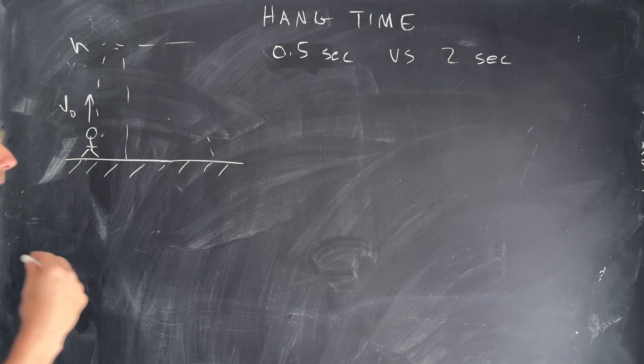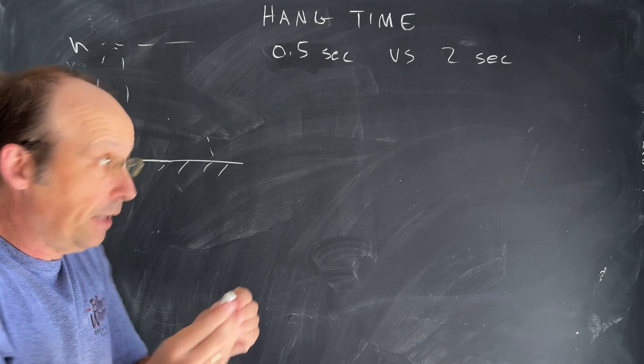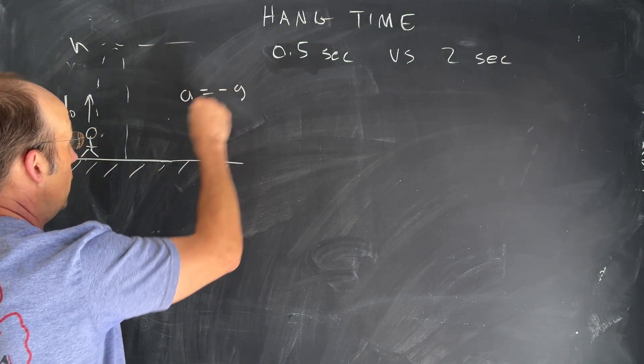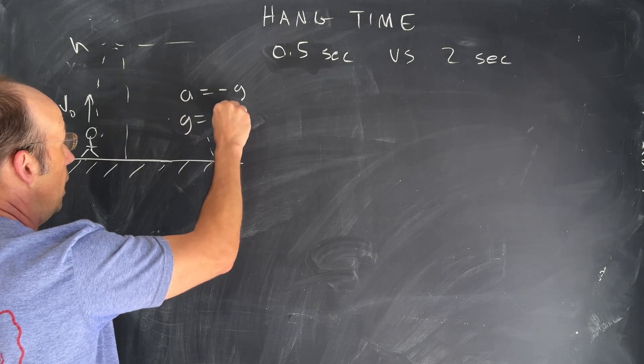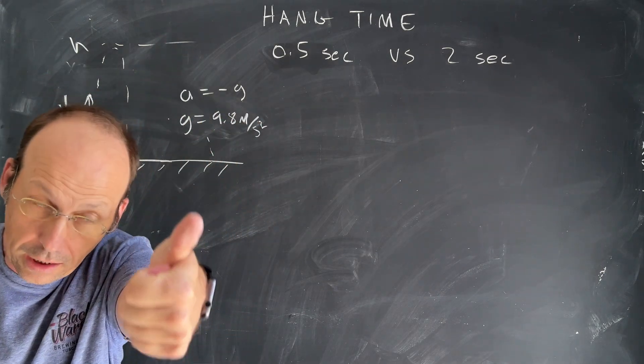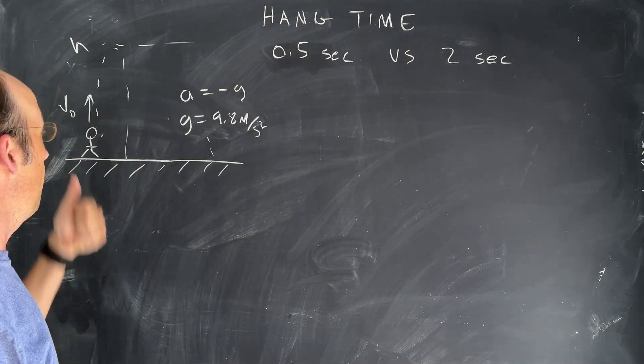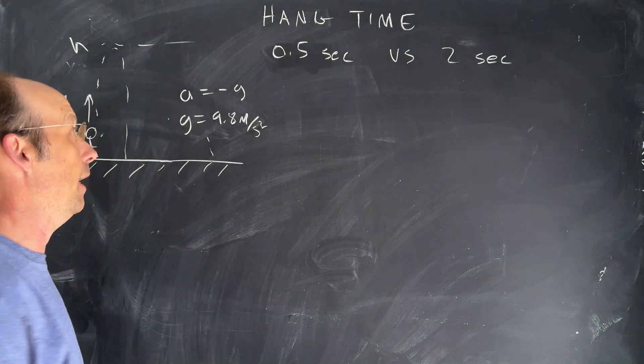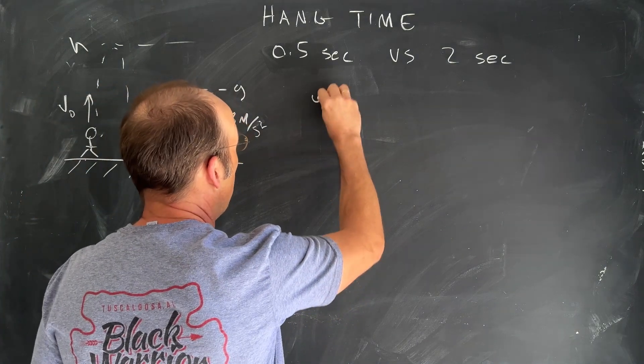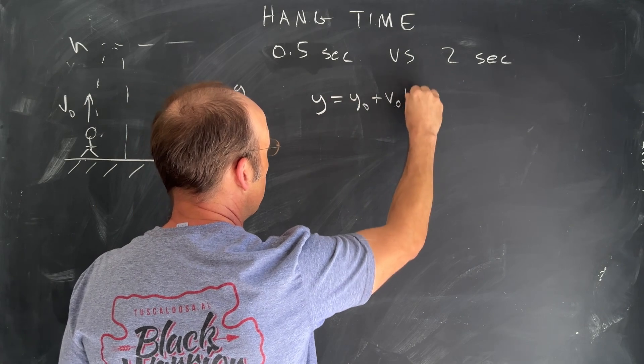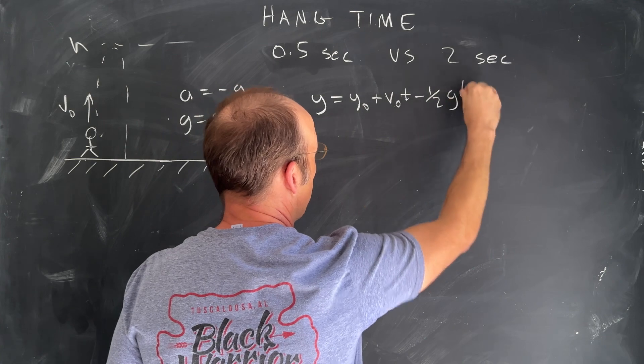So remember that once the person leaves the ground, the acceleration is negative g, where g is 9.8 meters per second squared. So we have that. Let's just go ahead and plug this into our kinematic equation, the one most important kinematic equation, which says this: y equals y zero plus v zero t minus one half g t squared.